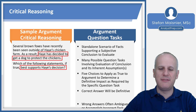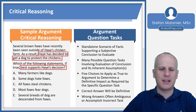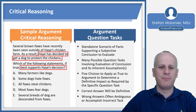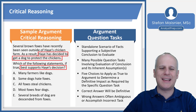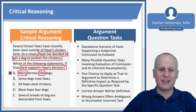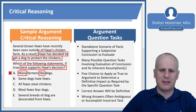The correct answer must be definitive, and wrong answers are frequently ambiguous or accomplish the incorrect task. So we introduce the answer choices trying to support Hay's decision. Choice A: 'Many farmers like dogs.' Many is vague, and we're trying to support the idea that he got the dog to protect the chickens, not because he likes dogs. We don't know if Hay likes dogs, and liking dogs is not related directly to protecting the chickens, so A can be eliminated. Choice B: 'Some dogs hate foxes.' Does that help protect the chickens? I don't know, and 'some' is incredibly vague as a quantifier.